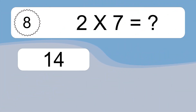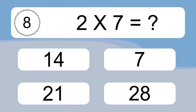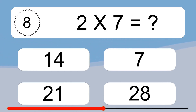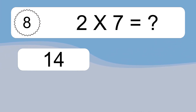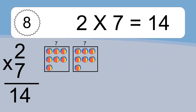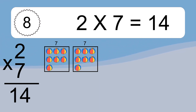Two times seven equals what? Two times seven equals fourteen. We have two boxes, and each box has seven colorful balls inside. If you count all the balls in all the boxes together, you will have two times seven balls.